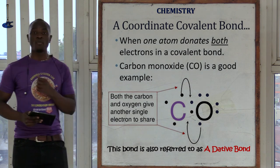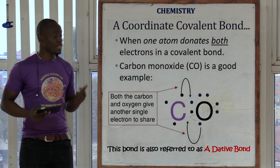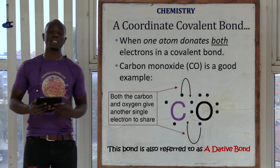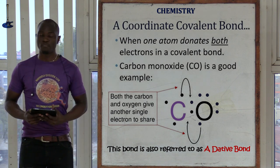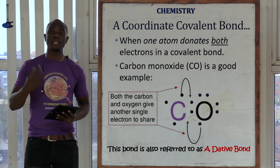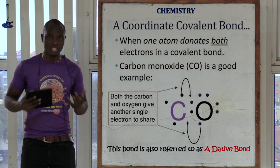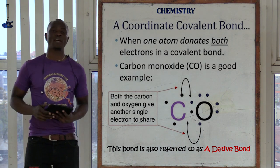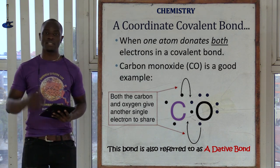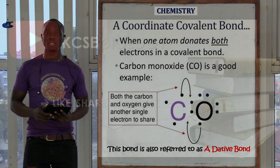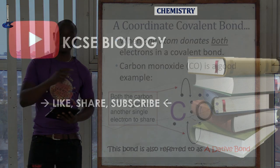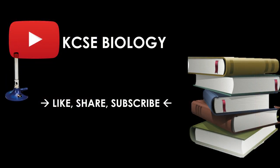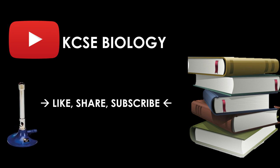Apart from ionic bond, we also have the dative bond or coordinate bond. A dative bond is mainly formed when one atom donates two electrons to be shared. In a covalent bond, each atom donates one electron — this atom donates one, the other donates one. But in a dative bond, it is only one atom that donates both electrons in order for them to be shared.